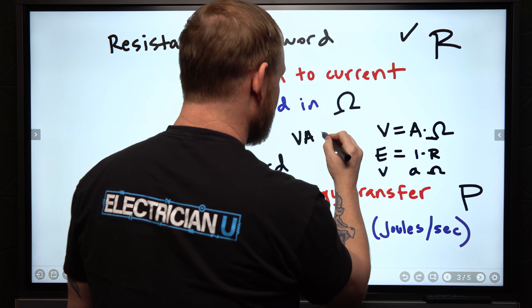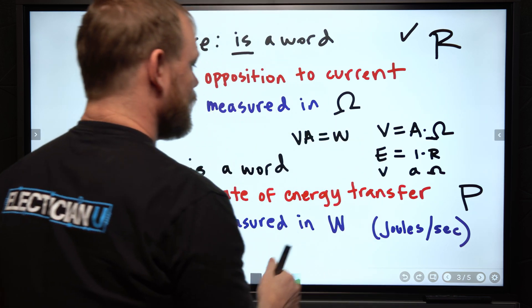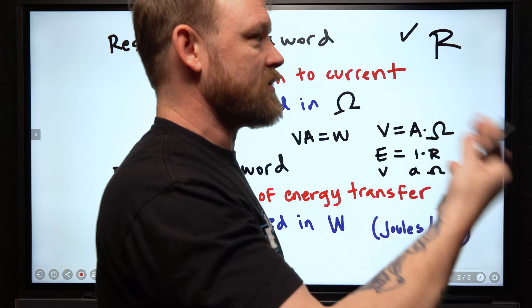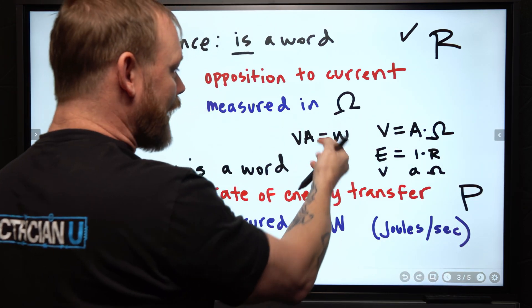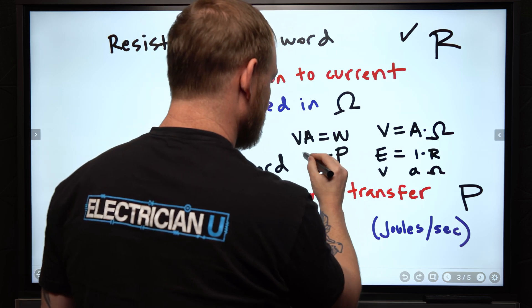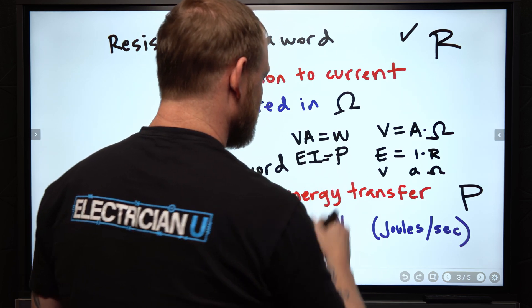So we wouldn't say for watts, we wouldn't say a VA equals W, unless we're trying to say that a volt amp equals a watt. But when we're trying to do a calculation, we don't write this. We write P equals E times I.